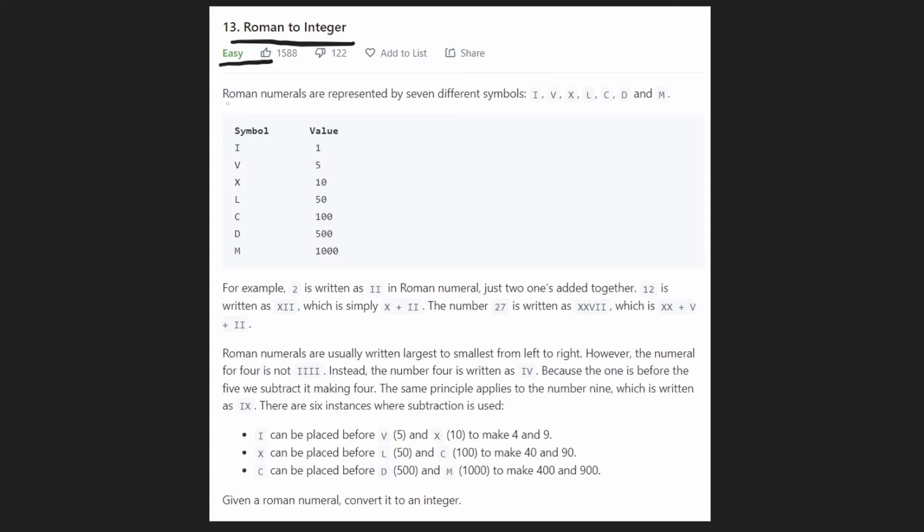So as you may know, Roman numerals are represented by seven different symbols. They give us each symbol and the mapping value. I'm going to summarize it to you in a few sentences. So we have this mapping of symbols to values. We're also told that Roman numerals are typically written from left to right in the largest to smallest order, meaning the largest symbol will go first and then the smaller symbol will go next.